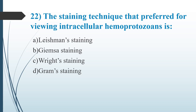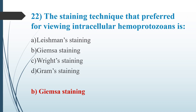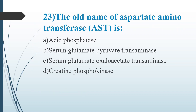Twenty-second question: The staining technique preferred for viewing intracellular haemoproteins is. Option A, Leishman staining. Option B, Giemsa staining. Option C, Wright staining. Option D, Gram staining. Answer is Option B, Giemsa staining.